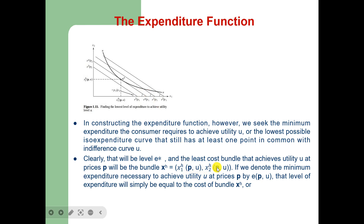X1-H is a function of the price vector P and utility U, and similarly X2-H is also a function of P and U. If we denote the minimum expenditure necessary to achieve utility U at prices P by E(P, U), that level of expenditure will simply equal the cost of bundle X-H: E(P, U) = P1·X1-H(P, U) + P2·X2-H(P, U), which equals the minimal expenditure E-star.